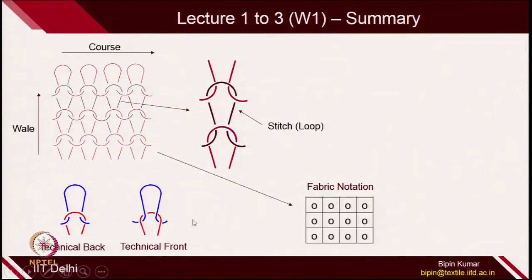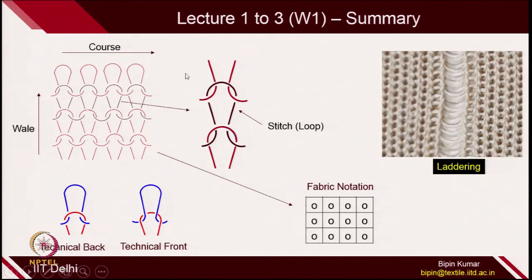We also let you know about how we can denote the entire fabric structure by a simple table diagram. All the loops are on the technical back side, so you can simply represent them as 0. There are 4 columns, and you can represent these fabrics very simply with the help of table notation. We also let you know the importance of intermeshing — if we lose any 2 intermeshing points of a particular loop, there could be a problem of laddering, where the entire loops will just open up if any loop breaks inside the fabric structure. Laddering is one of the key issues in weft knit structures.